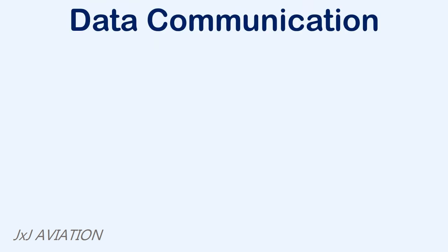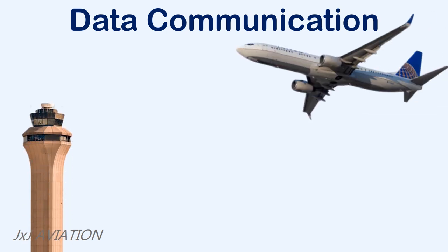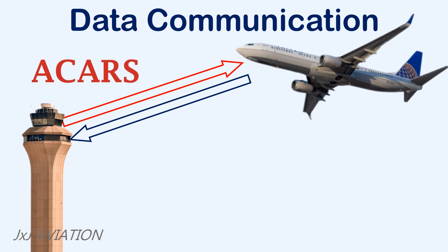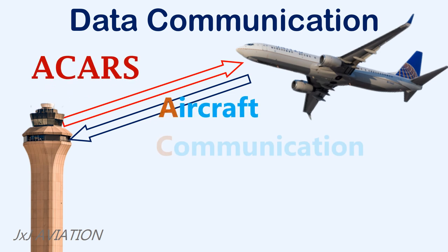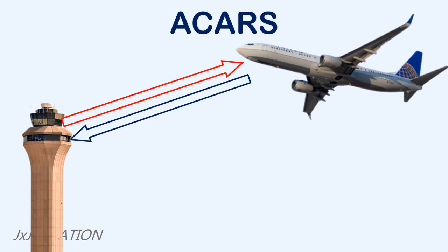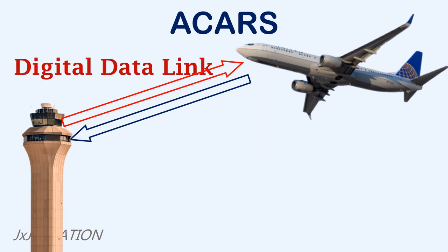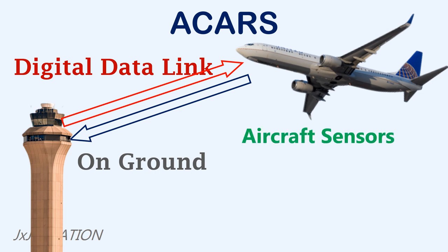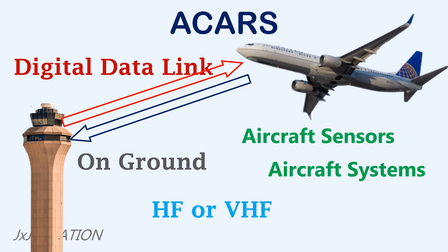Now let's look at how data communication takes place from the aircraft. In most modern aircraft, ACARS is installed. This stands for Aircraft Communication Addressing and Reporting System. This is responsible for receiving and transmitting data from the aircraft. The ACARS provides a digital data link for the aircraft, used to send specific information to different stations on the ground. The data that is sent is taken from different aircraft sensors or systems and is transmitted via HF or VHF depending on the aircraft's position.